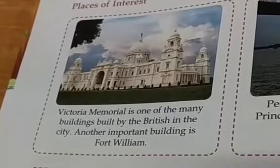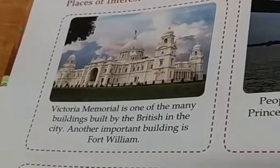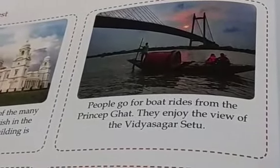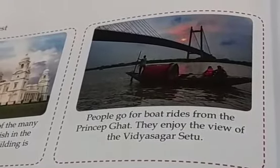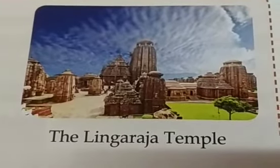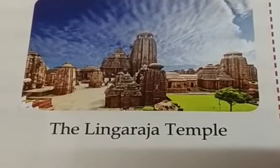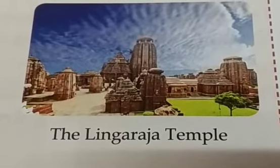Victoria Memorial is one of the many buildings built by the British in the city. Another important building is Fort William. People go for boat rides from the Prinsep Ghat and enjoy the view of the Vidyasagar Setu. Rabindra Sarobar is popular among tourists. Kolkata is known for museums such as the Indian Museum. The Dakshineswar Kali Temple and St. Paul's Cathedral are popular tourist sites. The city also has Eden Gardens, Birla Planetarium, Racecourse, Marble Palace, the Belur Math, and the Botanical Gardens near Kolkata.